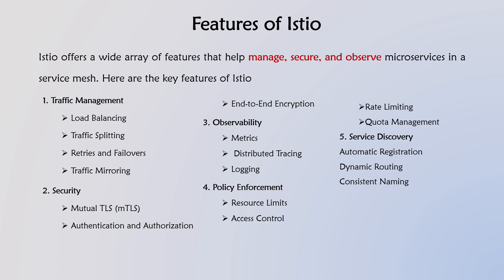The second feature area is security. Istio strengthens security across different services, especially useful in complex systems where securing each service individually can be challenging. With mutual TLS, both the client and server authenticate each other, ensuring only verified services communicate — essential for sensitive applications as it prevents man-in-the-middle attacks. Istio supports various authentication mechanisms to verify the identity of clients. Authorization policies enforce which services or users have access to specific resources, ensuring only permitted interactions occur. Istio encrypts all communication between services, securing data in transit, which is especially useful in public or hybrid cloud environments where data may cross insecure networks.